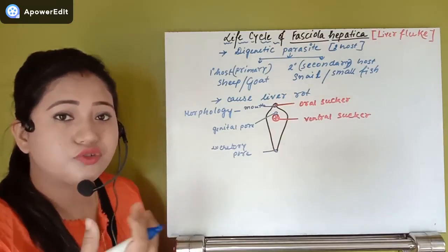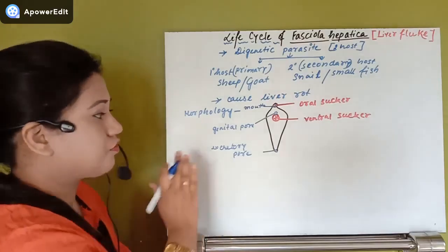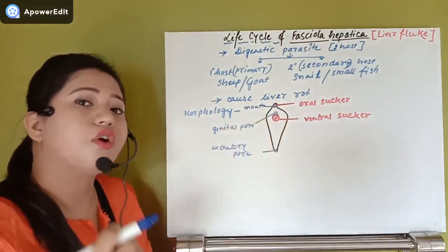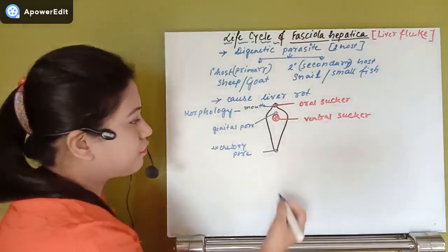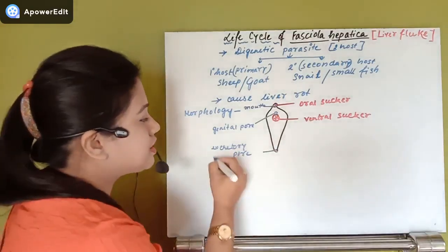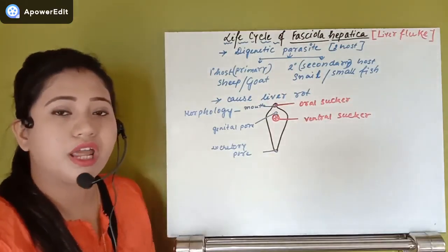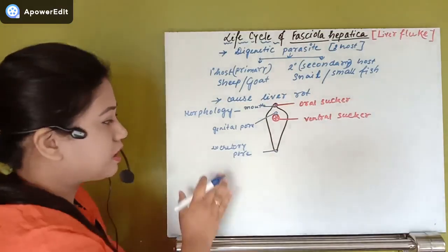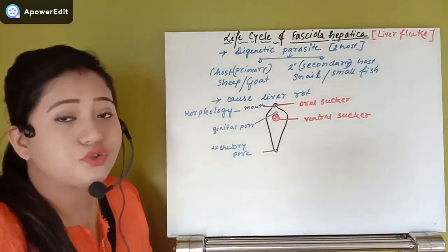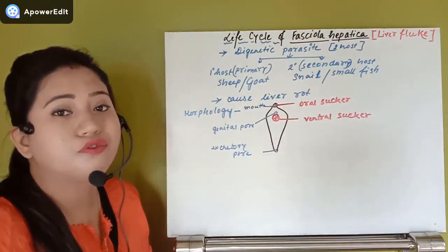All the flame cells throughout the body accumulate nitrogenous waste products and transport them into a common duct. That duct removes the nitrogenous waste through the excretory pore. The excretory pore is not the same as the anus — the excretory pore removes nitrogenous waste, while the anus removes fecal matter or undigested food molecules.